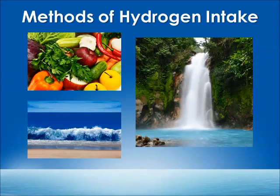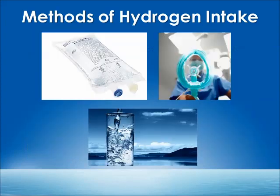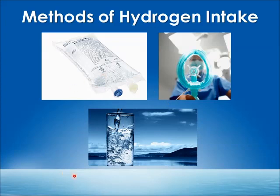The methods of hydrogen intake include being near the beach where waves are crashing, or near a waterfall, where a tiny amount of hydrogen is released into the air that we can breathe in. The best way to get hydrogen is through freshly picked vegetables — as soon as you harvest them, the hydrogen level starts to go down. In Asia, there is hydrogen-infused saline injected into the bloodstream and inhalation of hydrogen gas, but these require very precise protocols and a hospital setting — not very practical. The most practical method is simply drinking hydrogen water from a hydrogen water machine.